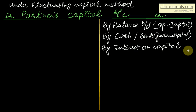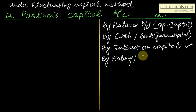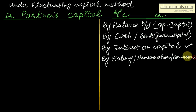What else can a partner receive from the partnership firm? If the partner is a working partner, they may receive salary. They may also receive commission or remuneration. So three more items on the credit side: salary, remuneration, or commission received from the firm. Interest on capital is already recorded. So on the credit side we write 'by salary, remuneration, or commission.'